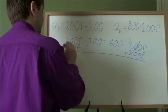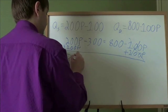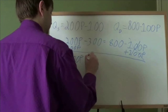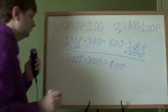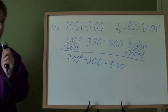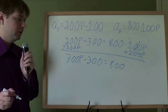200 plus 100 is 300P. So, 300P minus 300 equals 800.